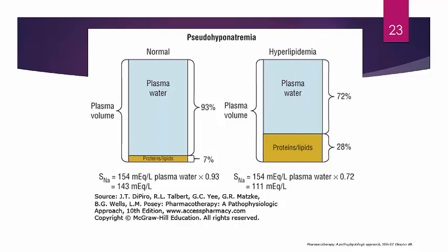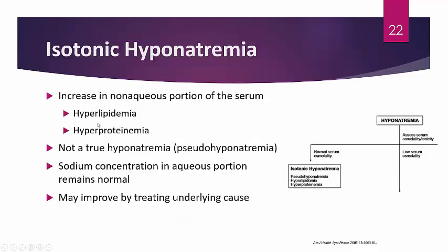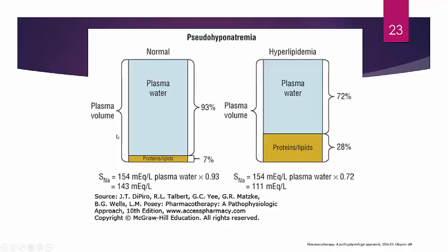The measurement captures the whole plasma volume, not just the plasma water concentration. Keep that in mind — isotonic hyponatremia is typically a pseudohyponatremia and doesn't require aggressive sodium correction.